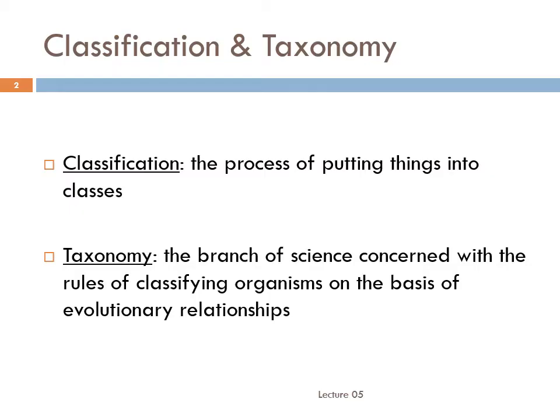The first thing we need to cover is biological classification. Classification is just the process of putting things into classes. Taxonomy is the branch of science concerned with the rules of classifying organisms on the basis of evolutionary relationships — it's the study of how to do classification of living things in the best, most useful way. We can't tell if new species have appeared unless we can list out the species both before and after and see that those lists are different. To do that, we need to be able to classify individual animals into species.